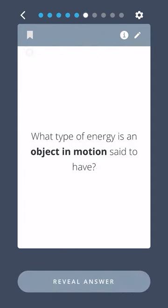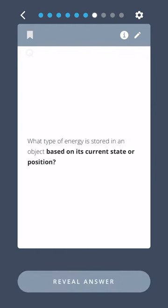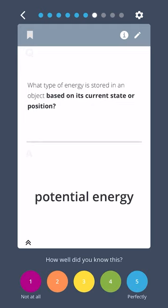What type of energy is an object in motion said to have? What type of energy is stored in an object based on its current state or position? Potential energy.